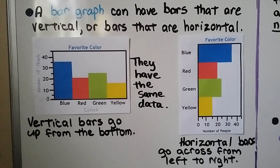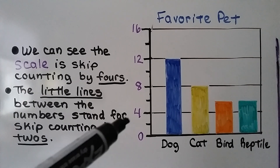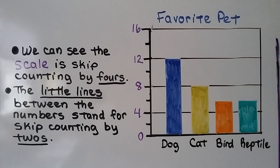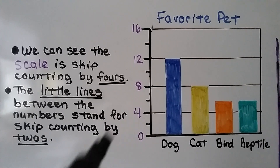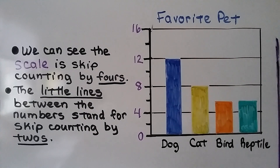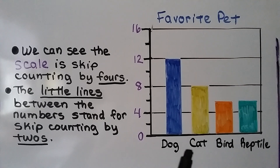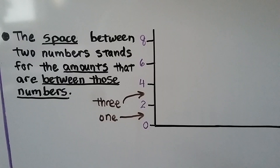This bar graph shows favorite pets. The scale skip counts by fours: it goes 0, 4, 8, 12, 16. The little lines in between the numbers stand for skip counting by twos. If the interval is four and a bar is in the middle, it's halfway — half of four is two. So we can count: 0, 2, 4, 6, 8, 10, 12, 14, 16. Twelve people chose dog, eight chose cat.